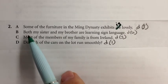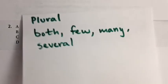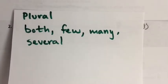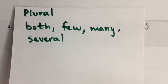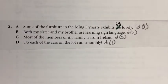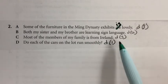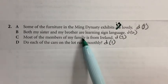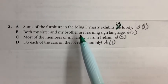Sentence B uses the word 'both.' 'Both' is an indefinite pronoun on the always-plural list, meaning we want a verb that does not end in S. 'Both my sister and my brother are learning sign language.' 'Are' doesn't end in S, so this one looks like a good answer.